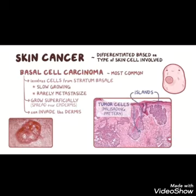It arises from stratum basale and grows superficially, spreading over the epidermis. It rarely metastasizes but can invade the dermis and even bone — eroding into deeper planes like soft tissues, cartilages, and bones. Hence the name 'rodent ulcer.'